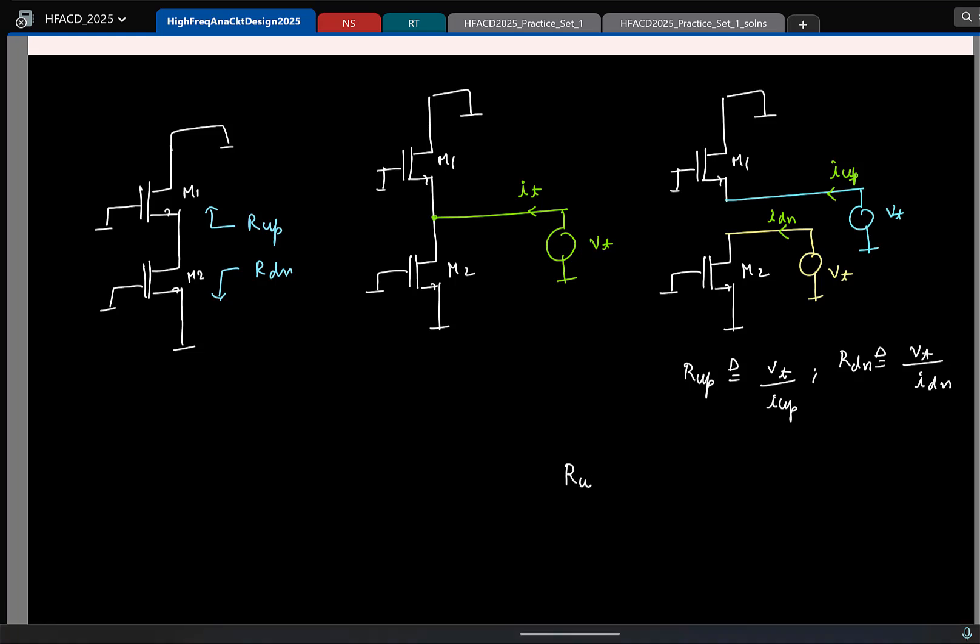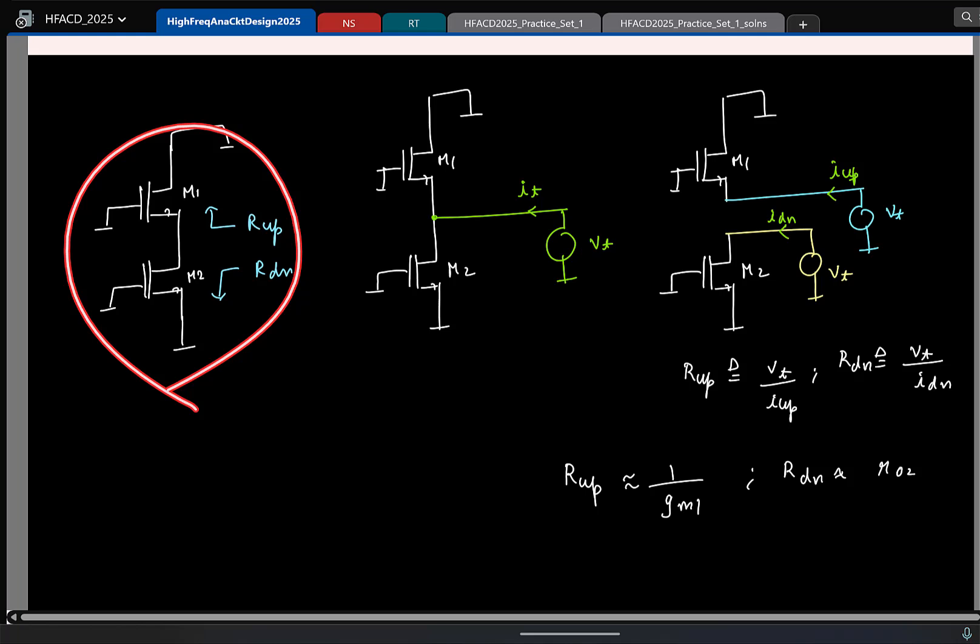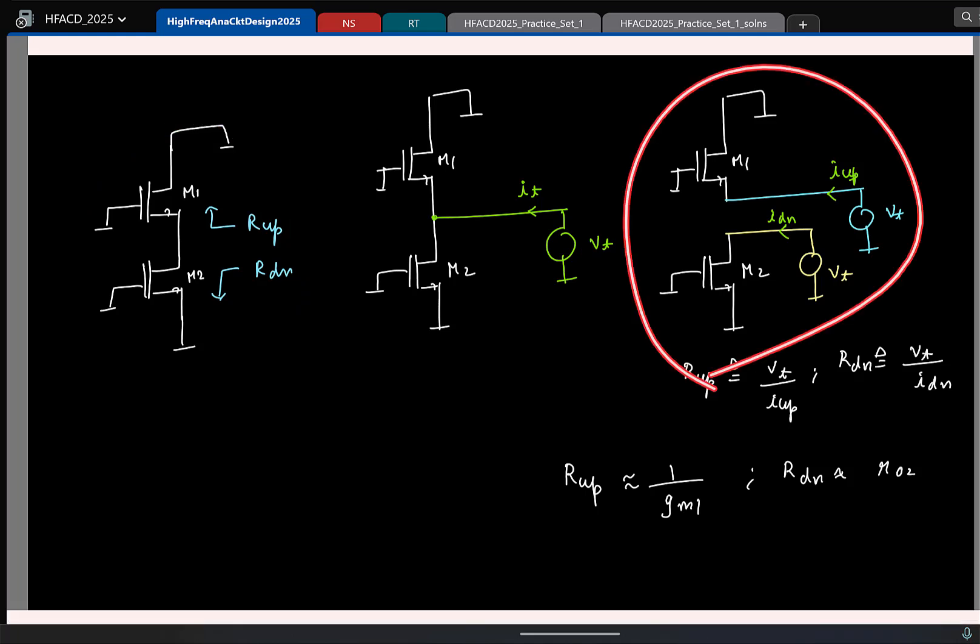So here, what is the up and down resistance, can you tell me? Up resistance is what? 1 by gm1. Please remember to include the subscript of the transistor, because that is the only way we can distinguish which transistor we are referring to. And what is R down approximately? R naught. So at least here, you can by inspection be able to see it. If it is more complicated, you can decompose it and find it.